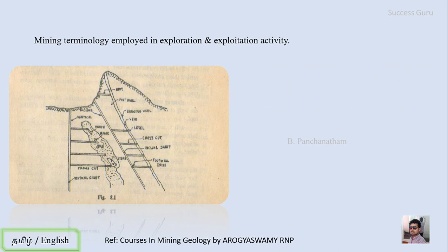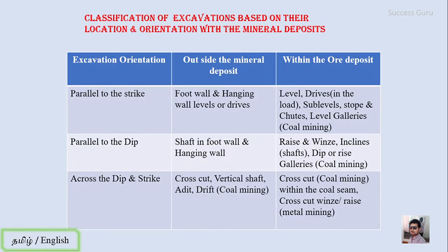These are the mining terms discussed. To reduce confusion, they can be grouped into three categories based on excavation orientation and location relative to the ore deposit. First, excavations parallel to the strike: if outside the ore deposit they are called foot wall or hanging wall drives; if inside the deposit they are called levels, drives, sub-levels, stopes, chutes, or level galleries in coal mining.